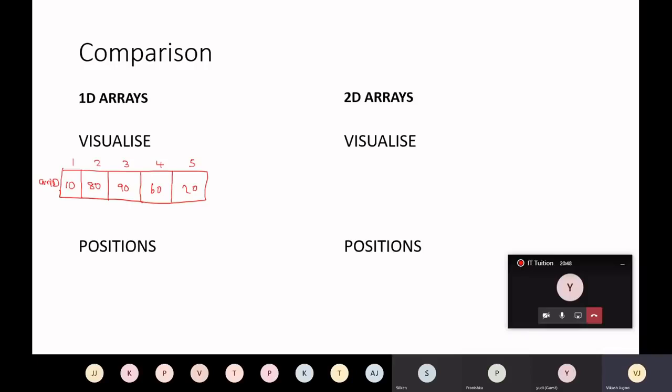So this is a typical one-dimensional array. We are quite familiar with something like this. We've used it. We've been able to go to each position in the array, making use of a for loop, which we'll discuss further. So what is a two-dimensional array?